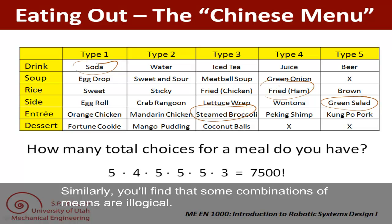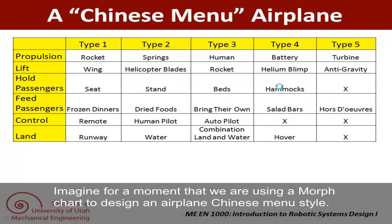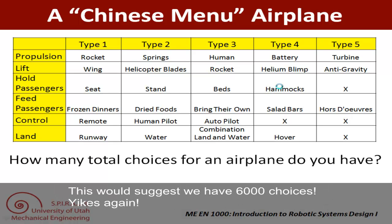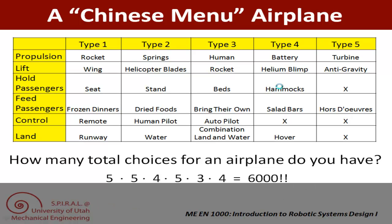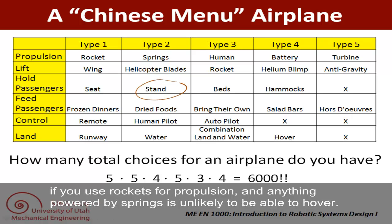Imagine that we are using a morph chart to design an airplane, Chinese menu style. This would suggest that we have 6,000 choices! But again, you can see that some combinations don't make sense. For instance, you probably can't have passengers stand if you're using rockets for propulsion. And anything powered by springs is unlikely to be able to hover.